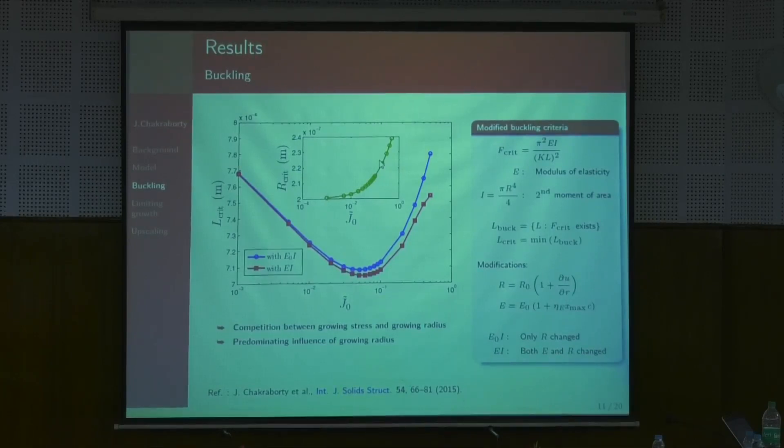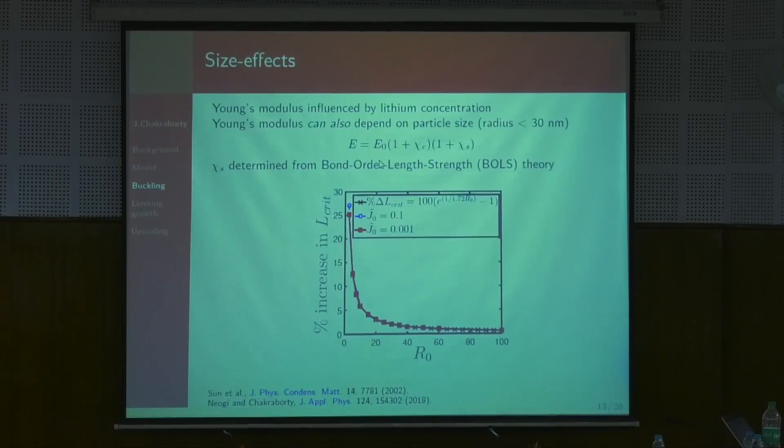We also studied the fact that if we keep decreasing the radius, there is a size-dependent effect on Young's modulus beyond a threshold. When we accounted for that and put it into our model, we found that the percentage change in critical length shows an interesting trend that we were able to fit to an exponential function, which we found rather interesting.